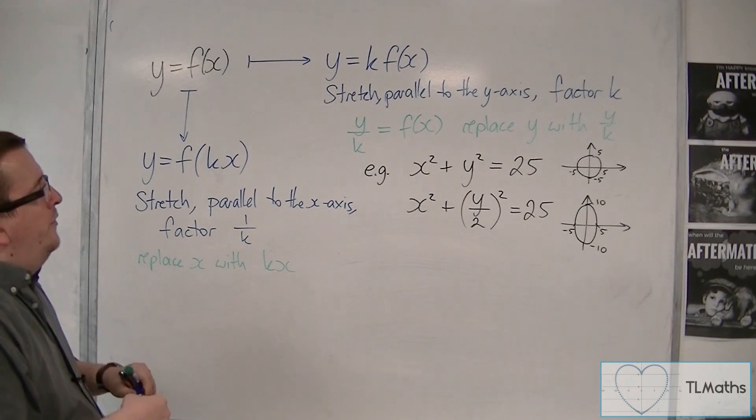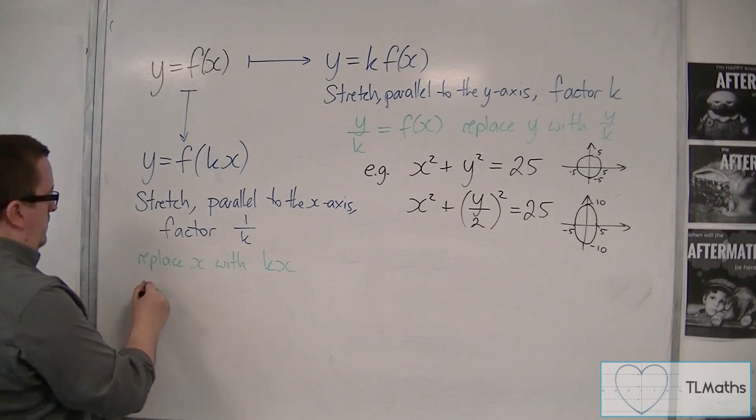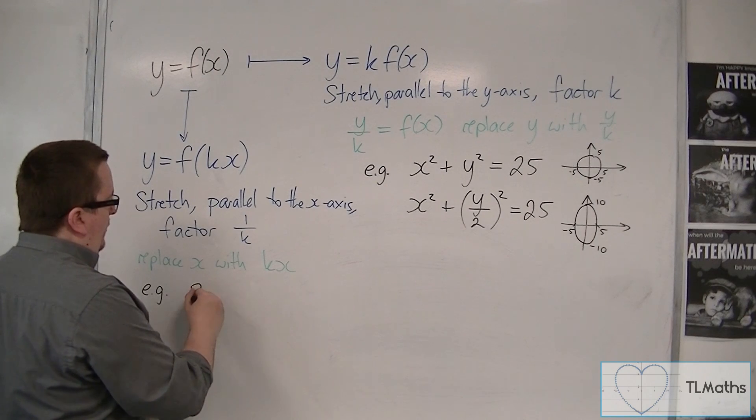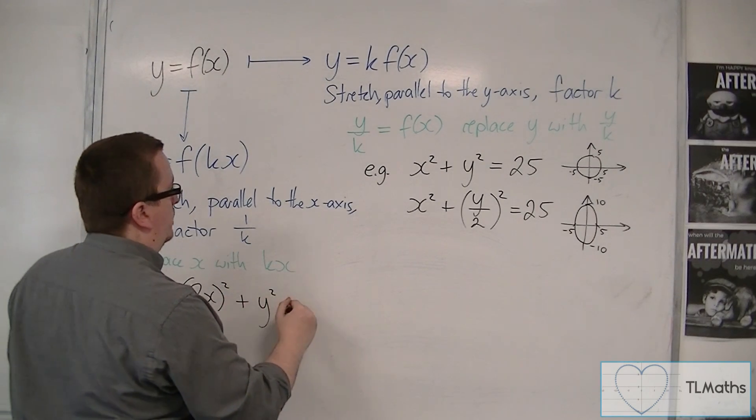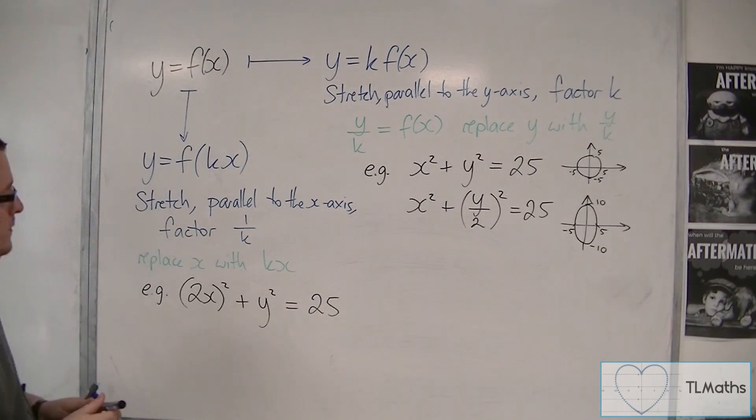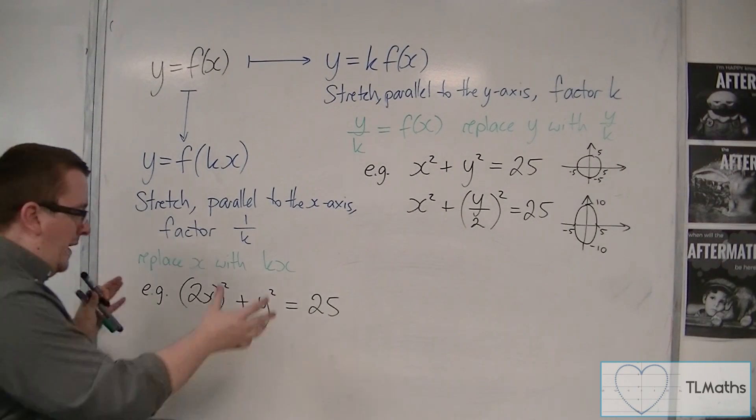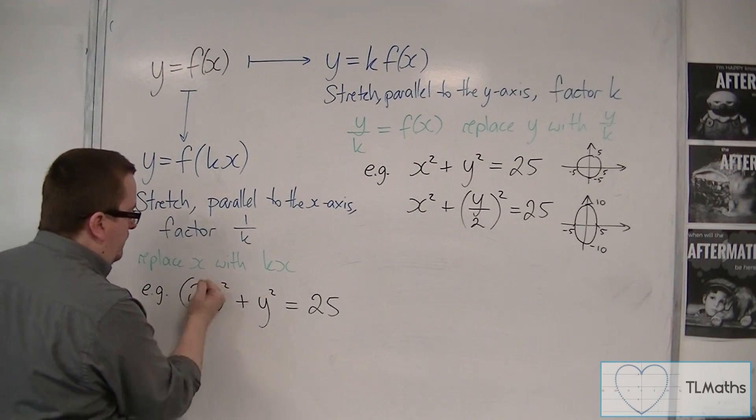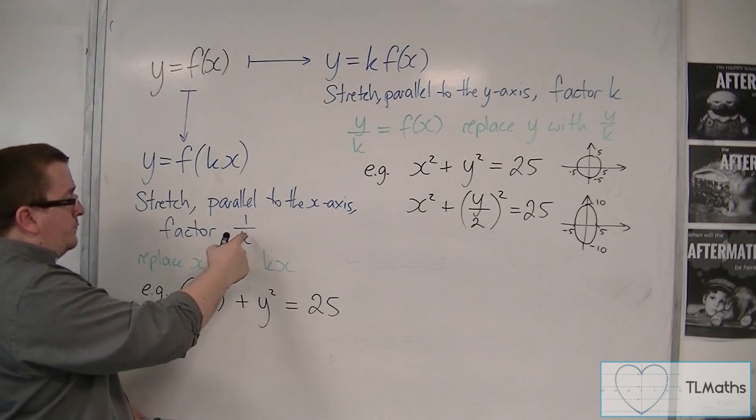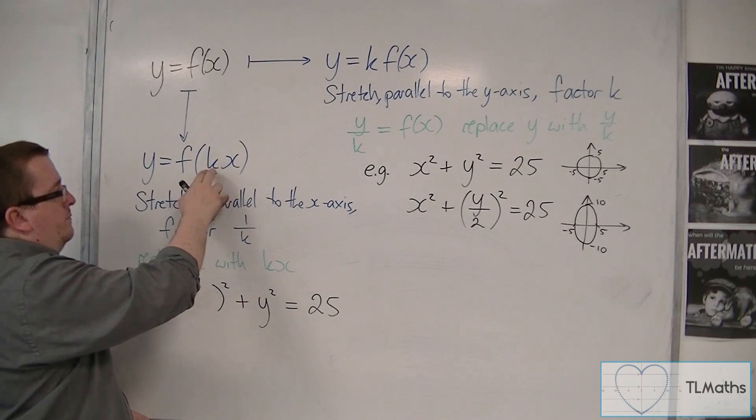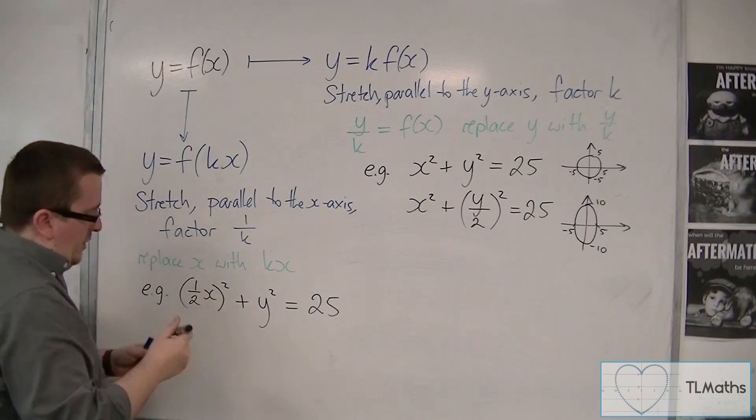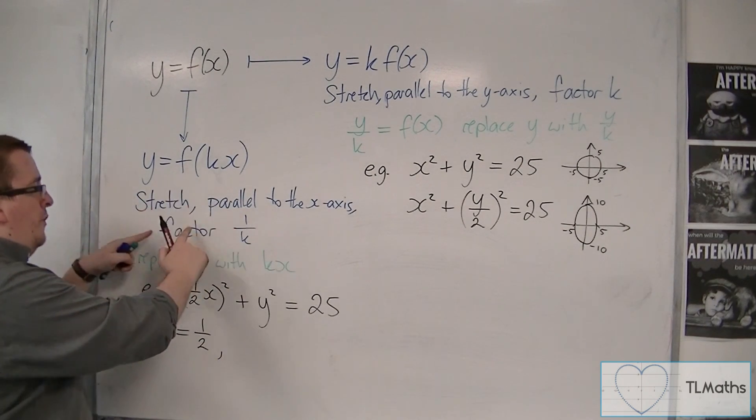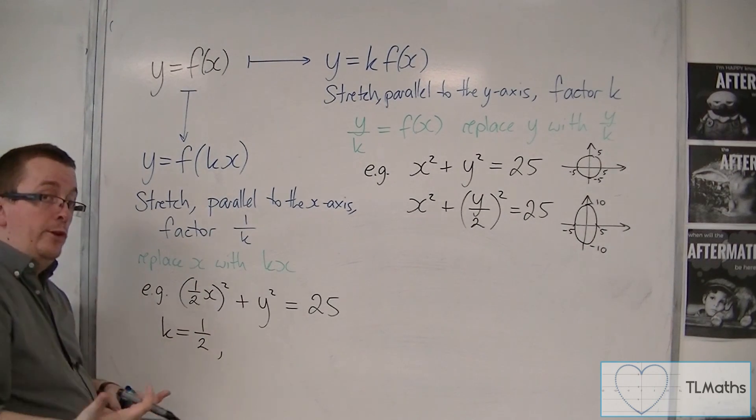So if I wanted to stretch this circle by factor 2 in the x, parallel to the x-axis now, I would replace the x with 2x. Oh sorry, that wouldn't stretch it by factor 2, that would stretch it by factor of a half. So if you wanted to stretch by factor of 2, you would have to have 1 over 2 as inside the bracket. Because if k is 1 half, so what I'm saying here is k is 1 half, so the factor is 1 over 1 half, which is 2.